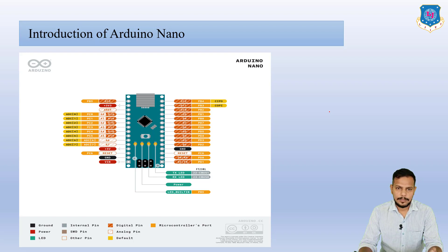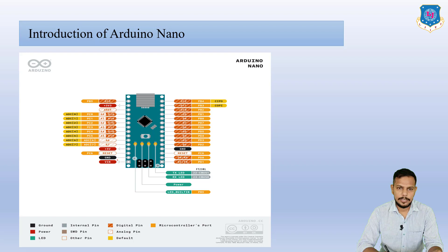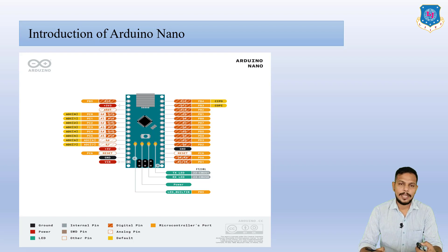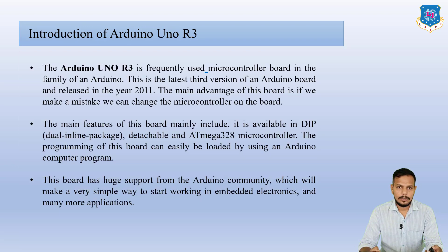In Arduino Nano there are a number of pins for digital and a number of pins for analog. Here you can see the 5V pin where we connect supply voltage, and the GND pin which should be grounded. This pin diagram is most important because you have to do practical work with its help, and then you can connect Arduino Nano with the sensors.